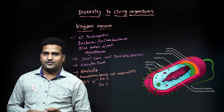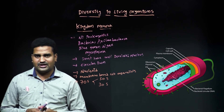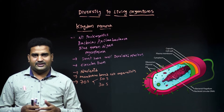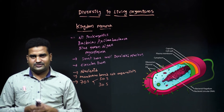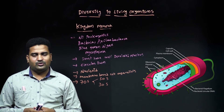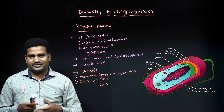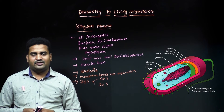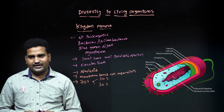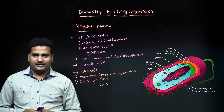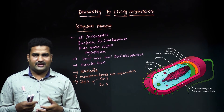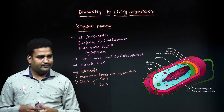Most prokaryotes are heterotrophic organisms, meaning they depend on other sources for food and cannot make their own food. Some organisms are autotrophs, such as blue-green algae. And some are chemo-autotrophs, such as sulfur-oxidizing bacteria.